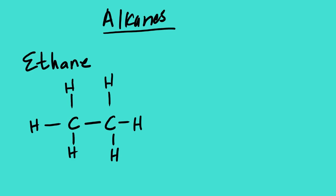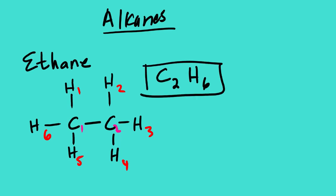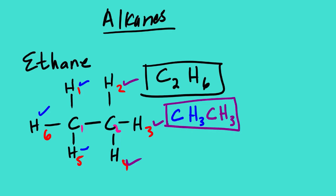Looking at the molecular formula, we have two carbons and counting the hydrogens: one, two, three, four, five, six. So the molecular formula is C2H6. Looking at the condensed formula — it's like a summary. The first carbon has three hydrogens: CH3. The second carbon also has three hydrogens: CH3. So the condensed formula of ethane is CH3CH3.